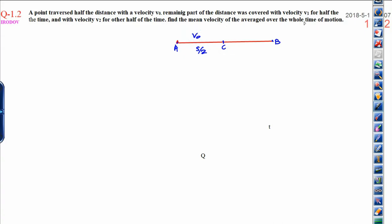Remaining part of the distance was covered with velocity v1 for half the time. Let again, the remaining part is divided. The total is s by 2 and this is divided in two terms, one part having velocity v1, another part having velocity v2.